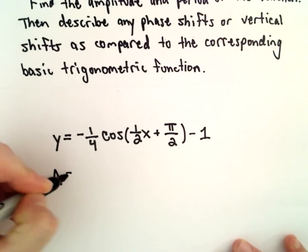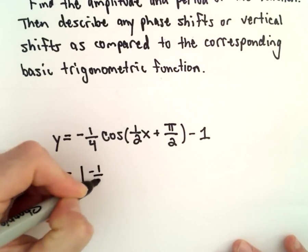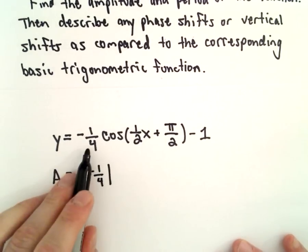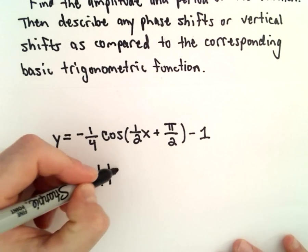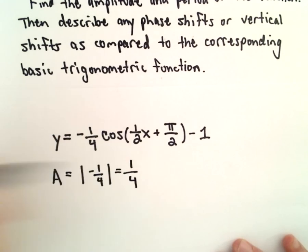So to get the amplitude, probably the easiest part, we'll just take the absolute value of the number out front, negative one-fourth, and then it'll give us one-fourth as our amplitude.